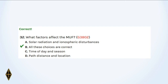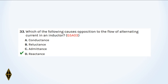And 32: What factors affect the maximum usable frequency? All of those things. Remember, maximum usable frequency is a point-to-point measurement — from here to London, say — and all of those things can change it. And 33: Which of the following causes opposition to the flow of AC current in an inductor? Inductive reactance, X sub L.